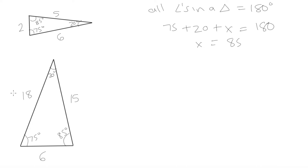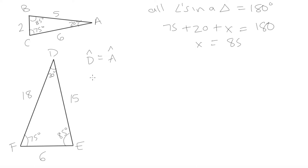Let's label the triangles: this one A, B, C and the other D, E, F. We already know that angle D equals angle A, angle F equals angle C, and angle E equals angle B. So the first criteria — corresponding angles are equal — is satisfied for these two triangles.